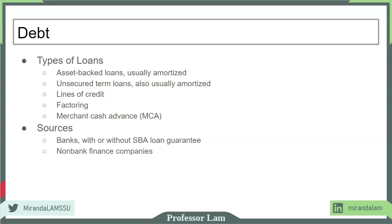Non-bank financial companies typically work with factoring and merchant cash advance. Merchant cash advance companies are a separate category on their own. Lastly, a new entrant to business financing is peer-to-peer lending. These are not formal banks, but other investors who are interested in lending money to small businesses.